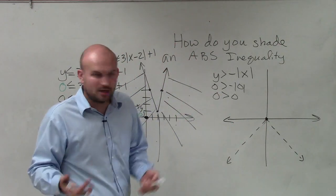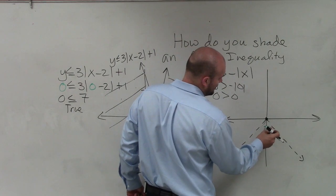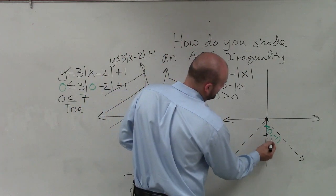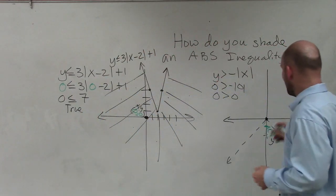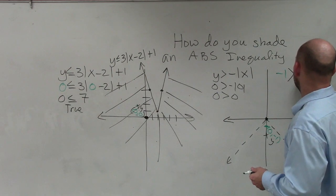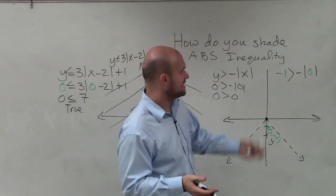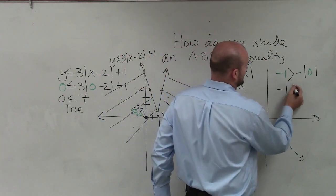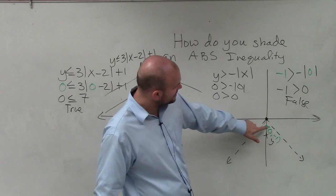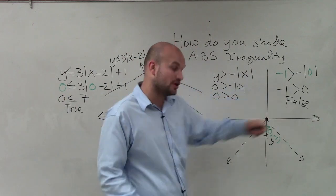We can choose a test point above or below — it doesn't really matter. So let's choose a test point below: the point (0, negative 1). Those are my x and y coordinates, and I'm going to plug them into my equation. So I have: negative 1 is greater than negative absolute value of 0. Absolute value of 0 is 0, and negative 1 times 0 is just 0. So negative 1 is greater than 0, which is false. Since that is false, this point is false. This point is below my absolute value inequality, which means all the points above my inequality are now going to be true.